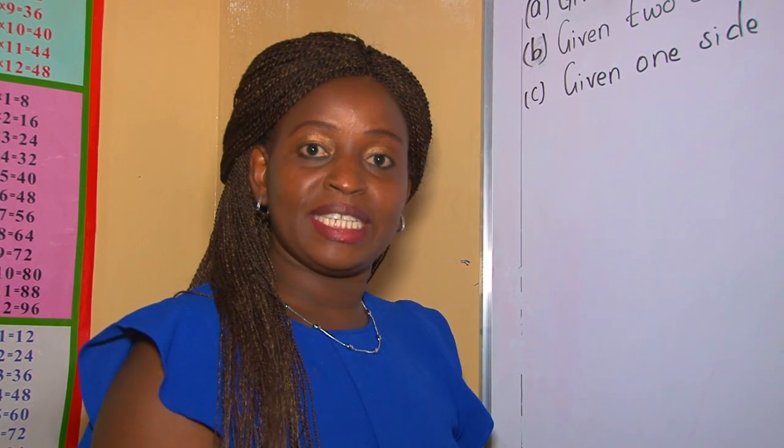These two arcs have met at a point of intersection. This point where the two arcs cut is point C. You can now use your ruler to join point C to A. We are now able to see our triangle ABC. From the point of intersection, you join C to A using a straight line and C to B, and that gives us an accurate triangle.